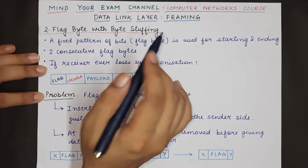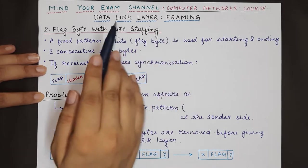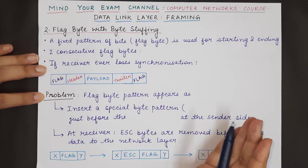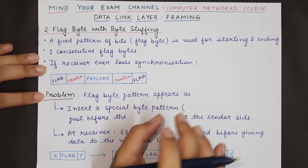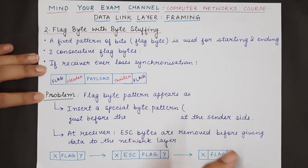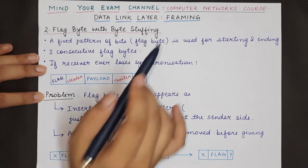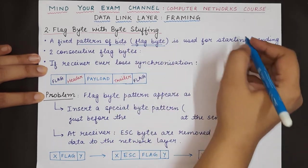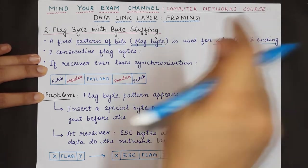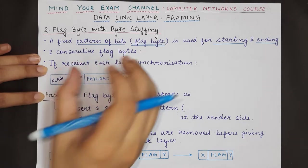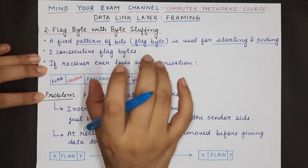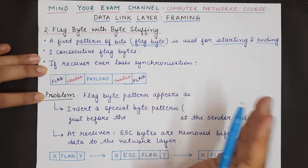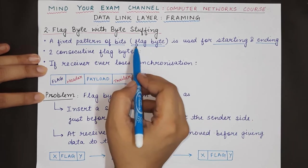What actually happens in framing is that the data link layer tries to define the starting and ending of frames, so that when a frame is received at the receiver side the data link layer there is able to distinguish one frame from the next. In this technique — flag byte with byte stuffing — a fixed pattern of bits known as the flag byte is used to represent the starting and ending of a frame. Every frame has a starting flag byte and an ending flag byte, both having the same pattern agreed upon by both sides before communication begins.